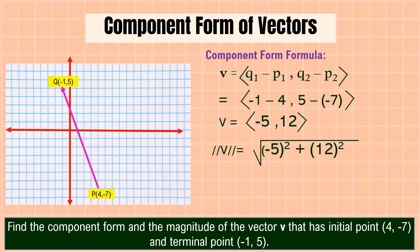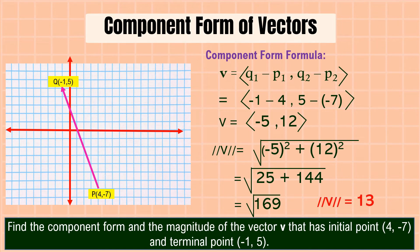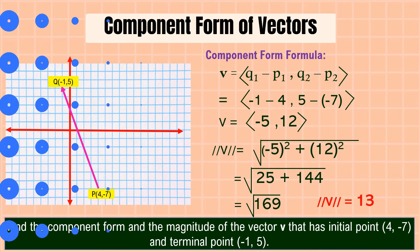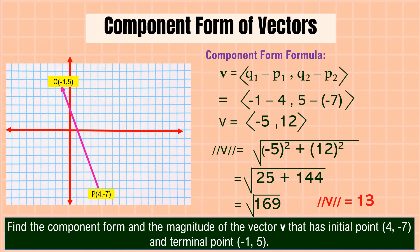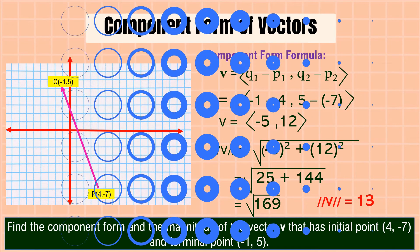Next, we're going to find the magnitude of vector v. We take the square root of (−5)² plus 12², and the magnitude is equal to 13. That is how we get the component form of a vector and find its magnitude.